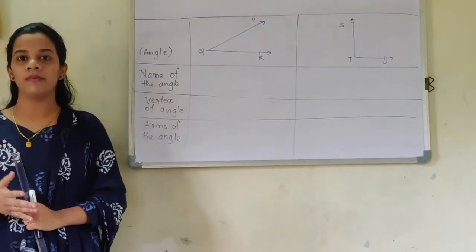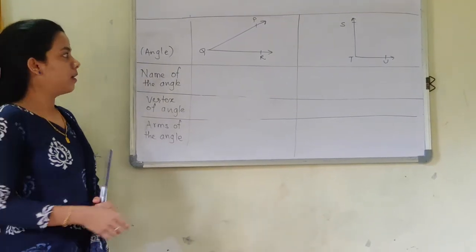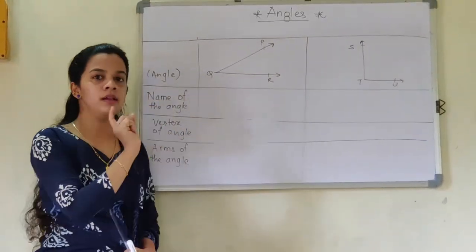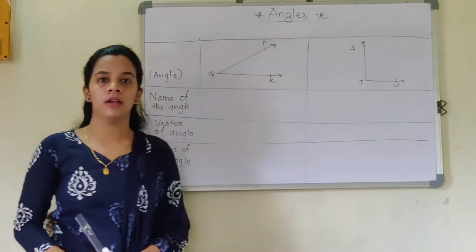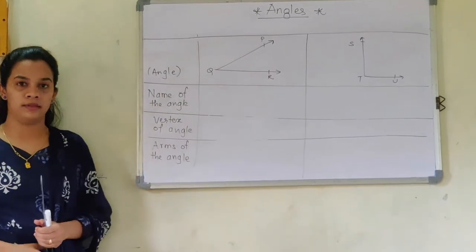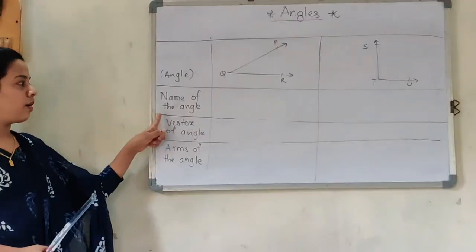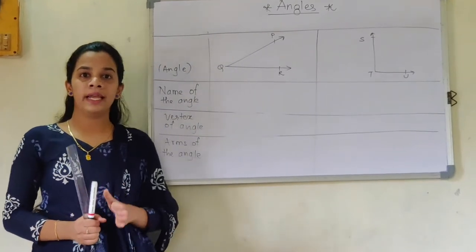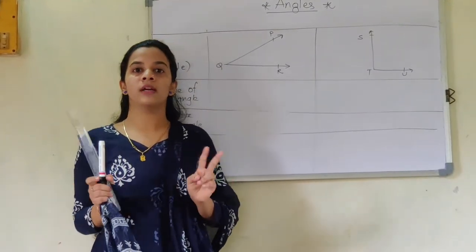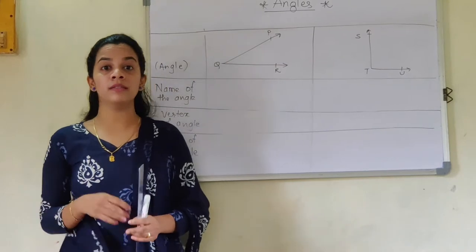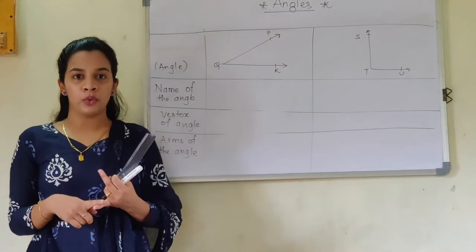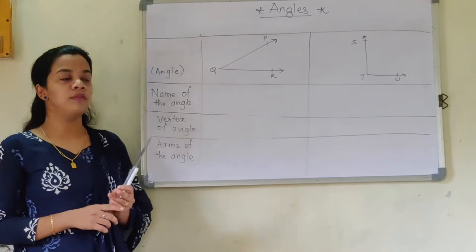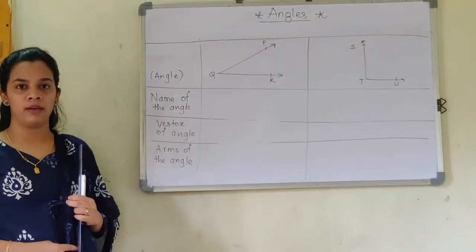So just help me out and we will solve it. Here they have given you two angles — this is one angle and this is another angle. They have asked you the first concept: the name of the angle, and also the type. These two things are totally different. Type means acute angle, obtuse angle, and right angle. But right now they have asked you the name of the angle.